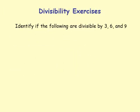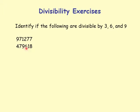Exercises: identify if the following numbers are divisible by 3, 6, and 9: 971277; 479618; 785482; 502771; and some more.